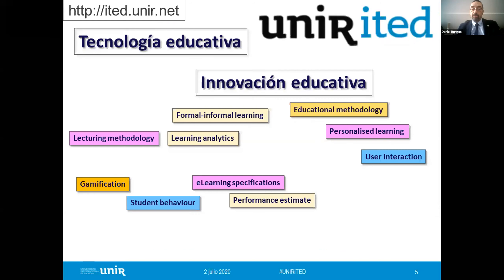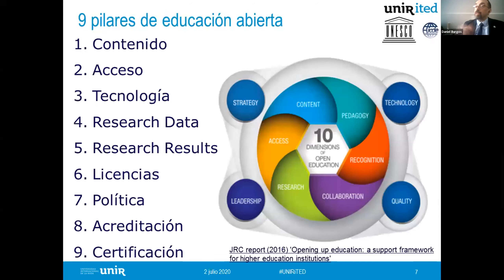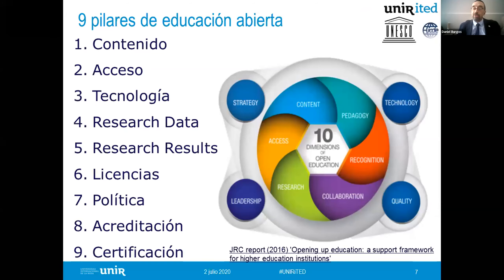Les voy a poner un ejemplo. Esto de aquí son los pilares de la educación abierta. En la parte izquierda tienen los nueve pilares reconocidos: el contenido, que es lo que cree todo el mundo, pero no es todo. La educación abierta abarca más cosas: acceso, tecnología, datos de investigación, resultados, licencias. A la derecha hay también un gráfico de las diez dimensiones de educación abierta: tecnología, estrategia, calidad, colaboración. La educación abierta no es solamente poner un PDF online para que alguien lo descargue en otra punta del planeta. Va sobre una atención transversal donde el contenido es uno de los elementos.